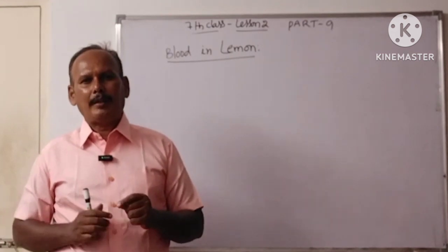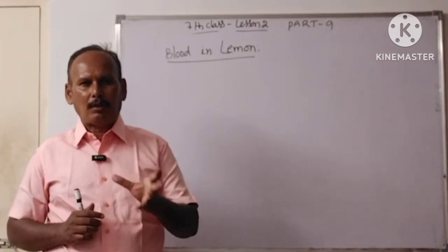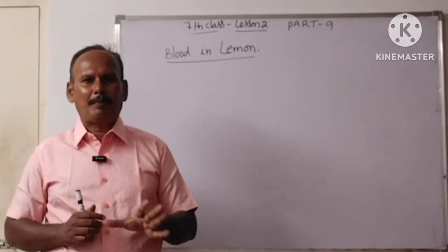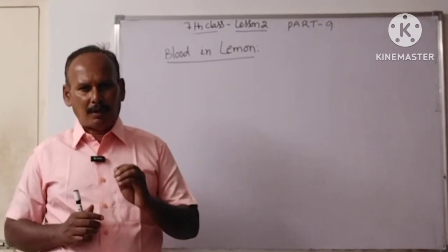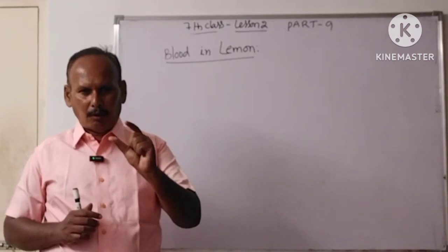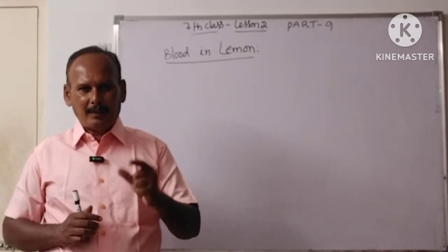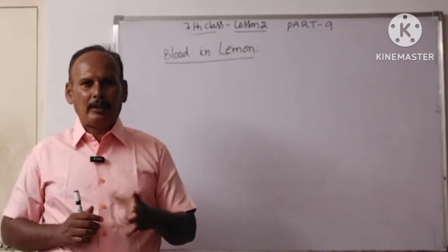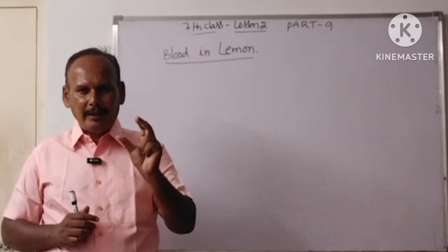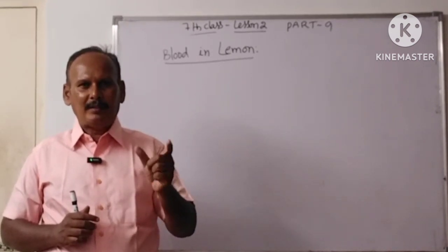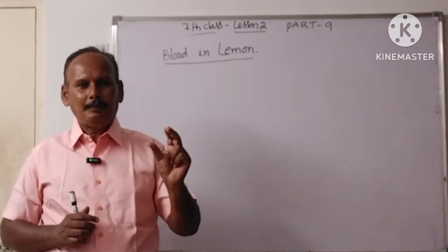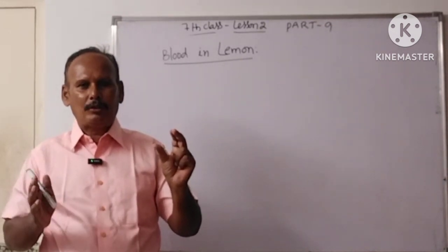Actually, blood does not come out from a lemon — it is false. A truth is hidden in it. What is actually hidden is an indicator inside the knife, a vakka indicator.